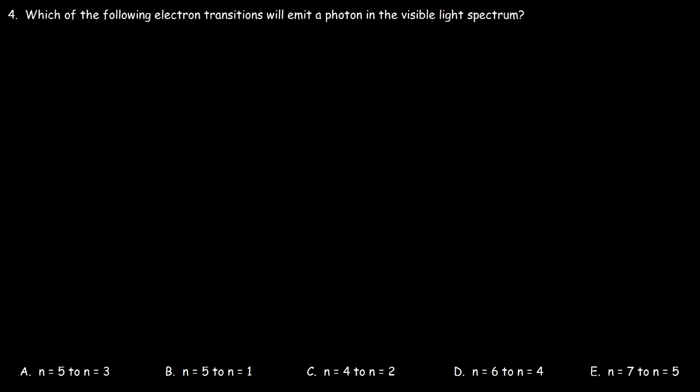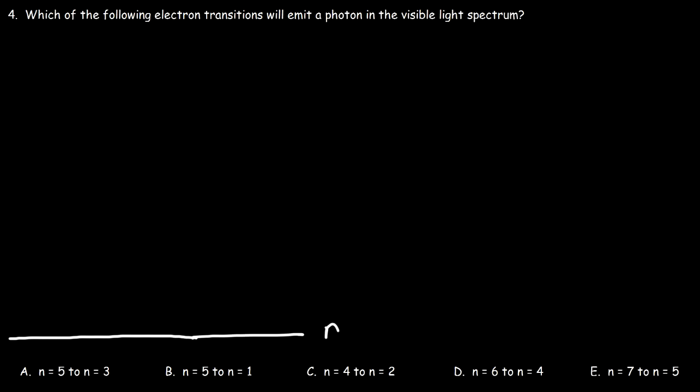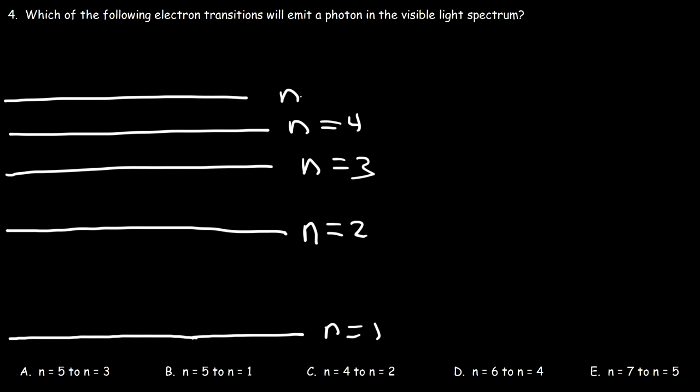Next question: which electron transition emits a photon in the visible light spectrum? To answer this you need to know the emission series. Transitions falling to n=1 form the Lyman series. Transitions falling to n=2 form the Balmer series. Transitions falling to n=3 form the Paschen series. Transitions to n=4 are the Brackett series, and transitions to n=5 are the Pfund series.